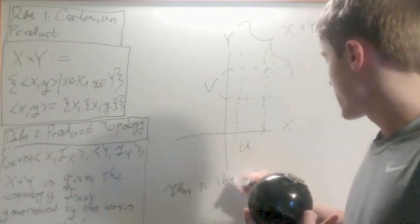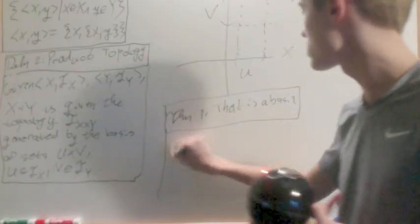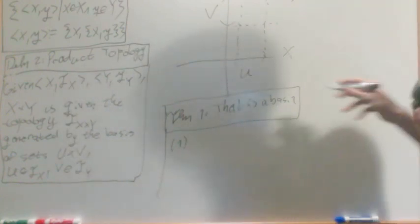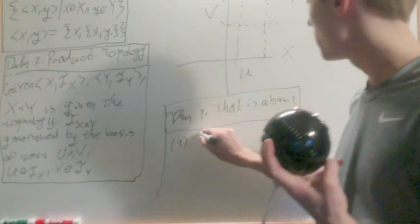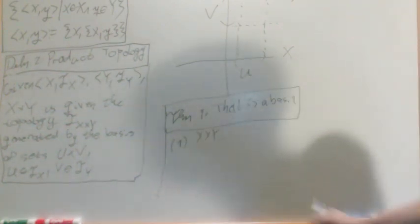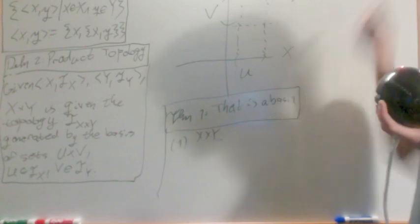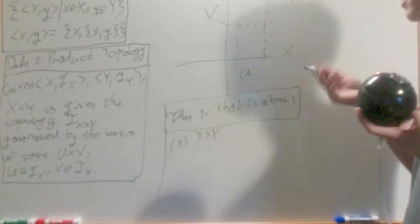Theorem: that is a basis. The first condition is that any x has a basis element around it. Well, you just do X cross Y. That's open, and so this is a basis element that contains every single pair, and so that contains, it's good.